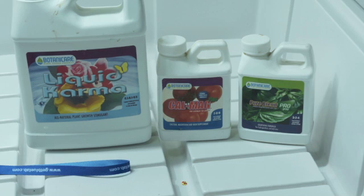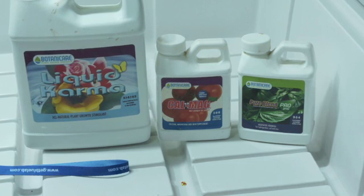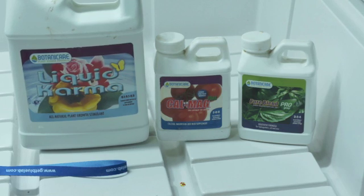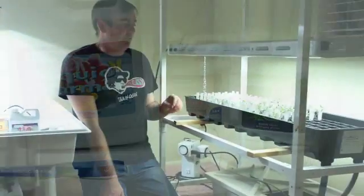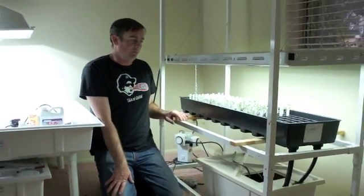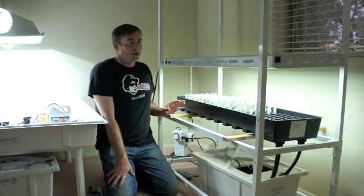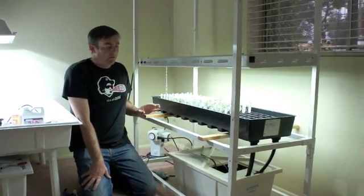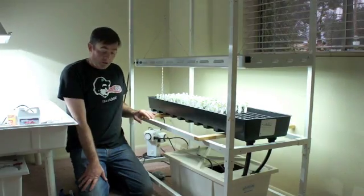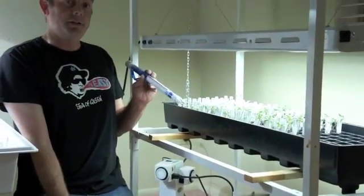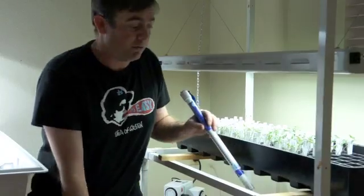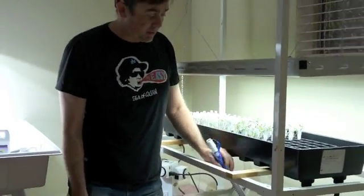As far as nutrients go, we're using Liquid Karma, Botanic Air Pure Blend Pro Grow, and a little bit of CalMag. To start them off before they've sprouted, I generally like to put about 200 parts per million of nutrient in there. We start off with reverse osmosis water. And using my blue lab trunch in here, you can use your TDS meter to check your total dissolved solids. That's how much nutrients in there.